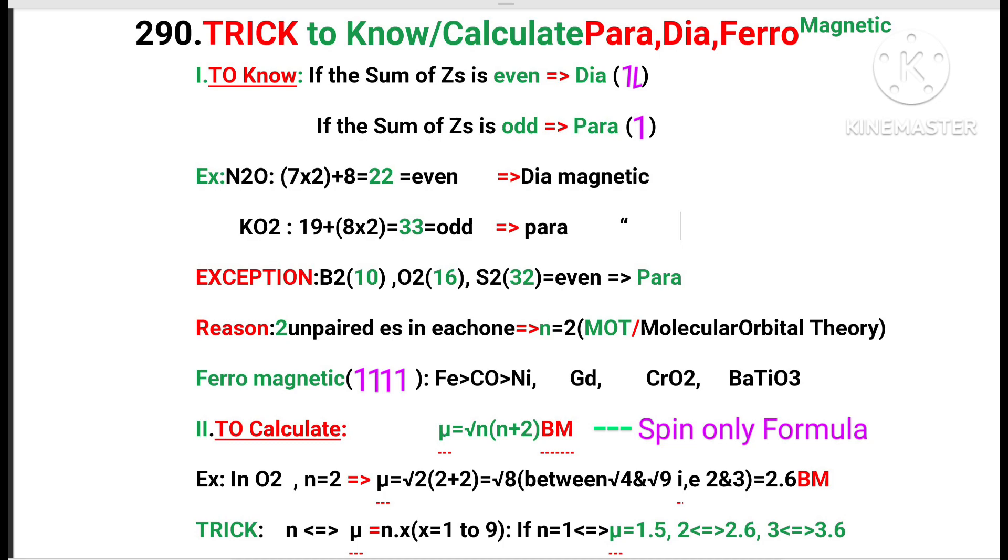Exception: B2 with 10 electrons, O2 with 16 electrons, S2 with 32 electrons. Total electrons are even, but it is paramagnetic. The reason is there are two unpaired electrons in each one, that is n equals 2, according to molecular orbital theory.